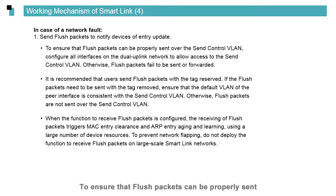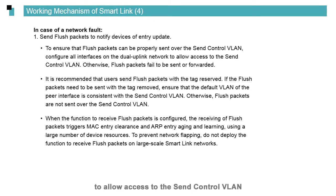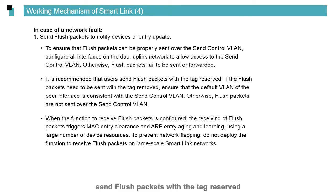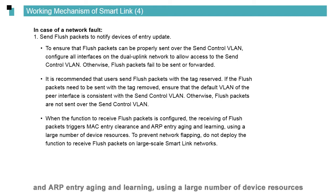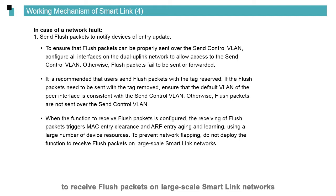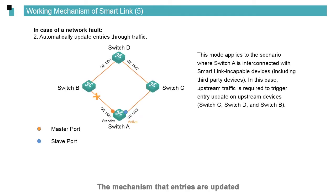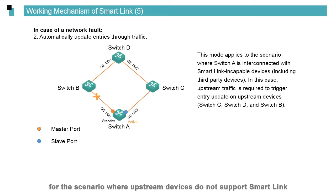To ensure that flush packets can be properly sent over the send control VLAN, configure all interfaces on the dual uplink network to allow access to the send control VLAN; otherwise flush packets fail to be sent or forwarded. It is recommended to send flush packets with a tag reserved when the function to receive flush packets is configured. Receiving flush packets triggers MAC entry clearance and ARP entry aging, consuming a large number of device resources. To prevent network flapping, do not deploy the function to receive flush packets on large-scale smart link networks.